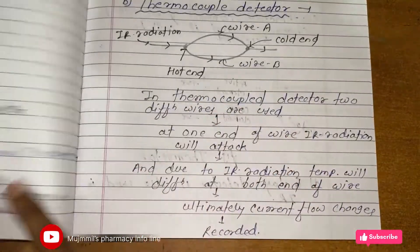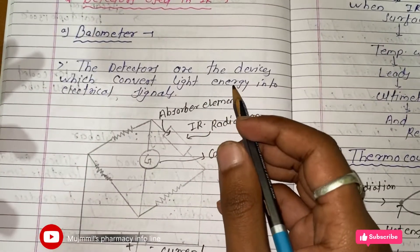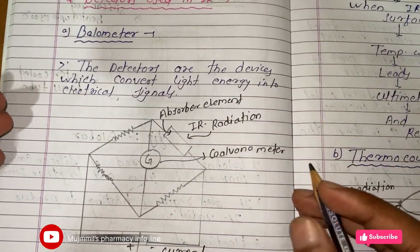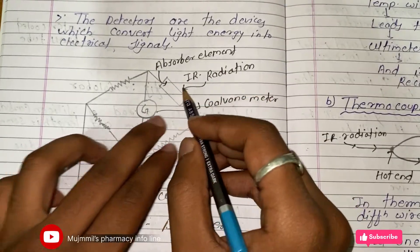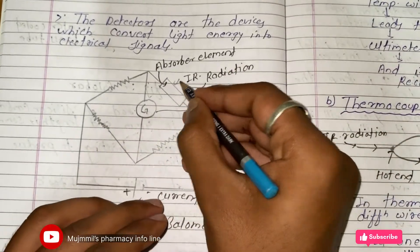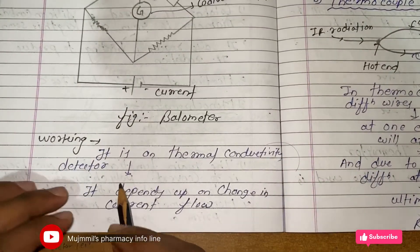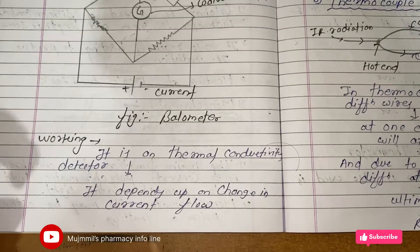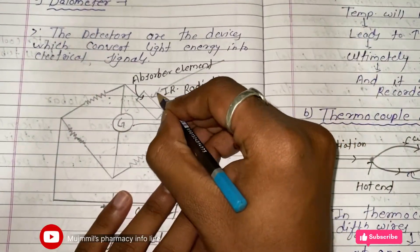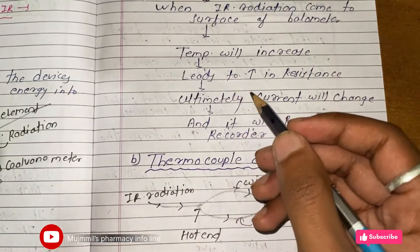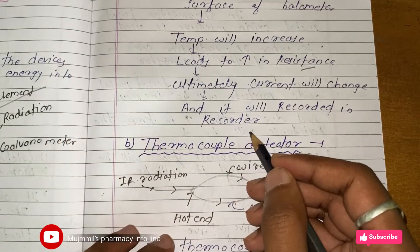Let's see the detectors used in IR spectroscopy. Detectors are devices that convert light energy into electrical signals. The first detector is the bolometer. It uses a galvanometer and has an absorber element where IR radiation is incident. The bolometer is a thermal conductivity detector dependent on change in current flow. When IR radiation hits the surface, it increases temperature, which increases resistance, and ultimately the current changes and is recorded.